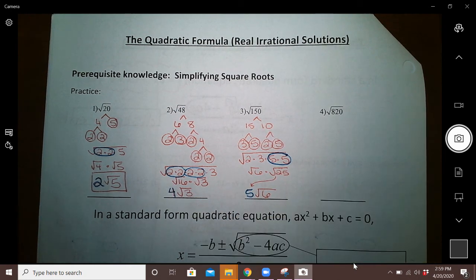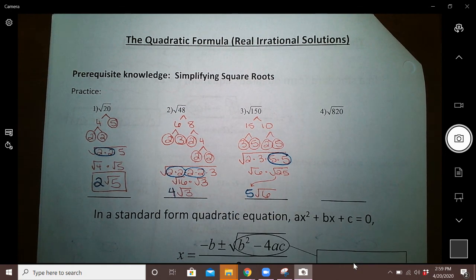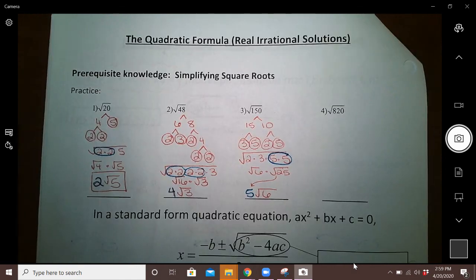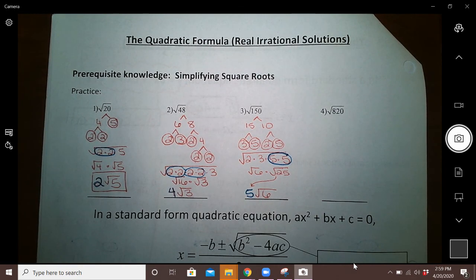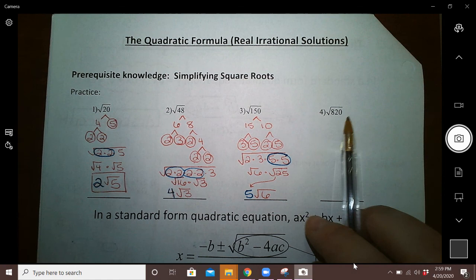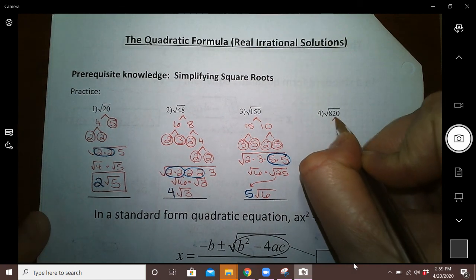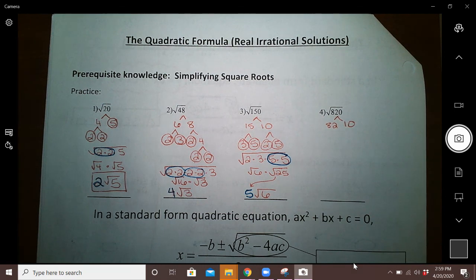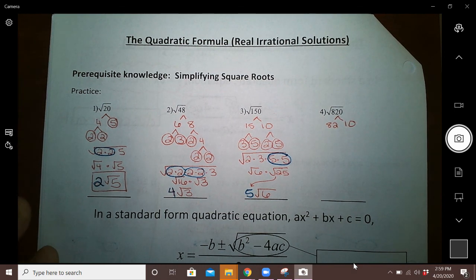If you want that in-between step, you would write it like this: the square root of 6 times the square root of 25, and guys, the square root of 25 is 5. Okay, one final example for you: the square root of 820. Now don't freak out; that's a big number, but remember what I said—anything that ends in a zero can be divided by 10.